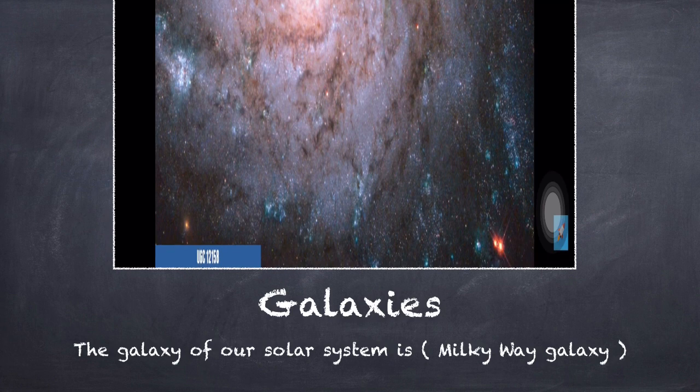Stars exist in groups called galaxies. Galaxies are the greatest units that form the universe. They are a tremendous collection of stars, a system that consists of thousands of millions of stars. The galaxy that our solar system belongs to is known as the Way of Chopped Hay galaxy or the Milky Way galaxy.